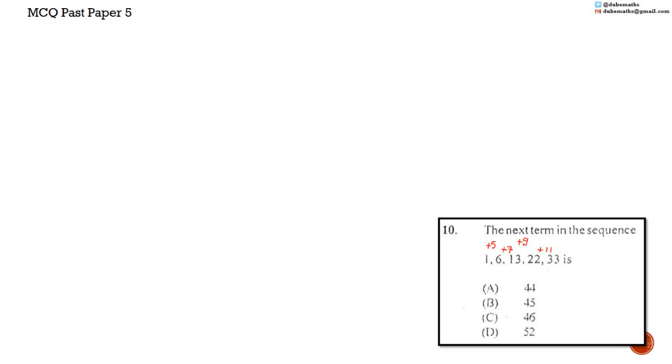5, 7, 9, 11. So each time we add in 2 more. So it stands to reason that to get the next number, we will add 13. 33 plus 13 is equal to 46. So the answer is C.